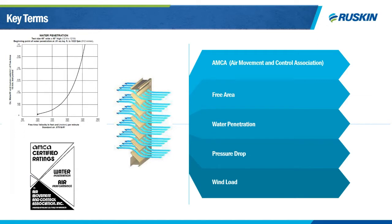Let's look at some key terms to consider when selecting a louver model. The first is AMCA, the Air Movement and Control Association. This is an international, not-for-profit organization that sets standards for manufacturers of fans, dampers, louvers, air curtains, and other air system components for commercial HVAC, industrial process, and power generation applications. This is an industry certification — not just Ruskin — but an independent third party that confirms all of our models perform in the way in which they're published.